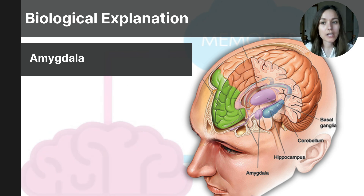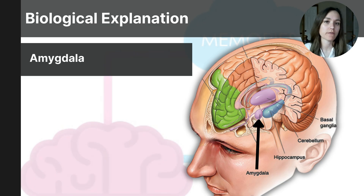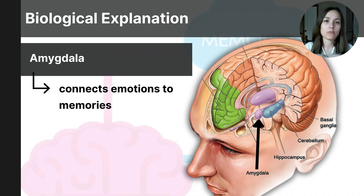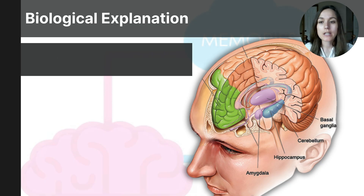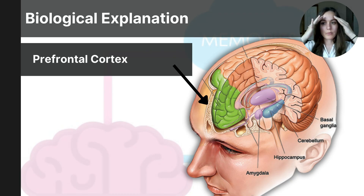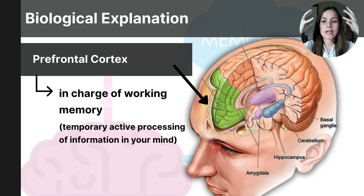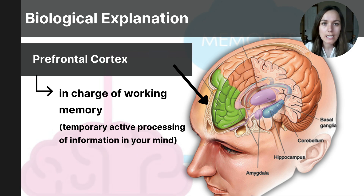Next is the amygdala. You are familiar with the amygdala for its role in emotion, especially fear, anger, and aggression. The amygdala is also responsible for connecting emotions to memories, which makes emotionally significant events easier to remember, especially fear-related ones. Next is the prefrontal cortex, which is in charge of your working memory — a type of memory involved in the temporary active processing of information, planning, decision-making, and organizing thoughts.